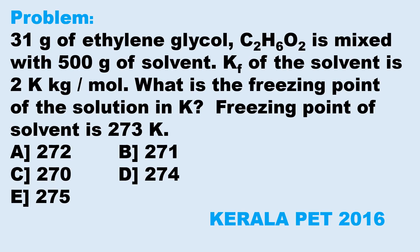31 grams of ethylene glycol (C2H6O2) is mixed with 500 grams of solvent. Kf of the solvent is 2 Kelvin·kg/mol. What is the freezing point of the solution in Kelvin? Freezing point of solvent is 273 Kelvin. Option A: 272. Option B: 271. Option C: 270. Option D: 274. Option E: 275.